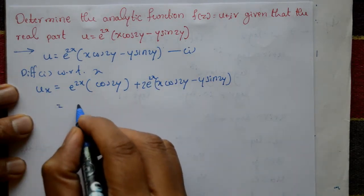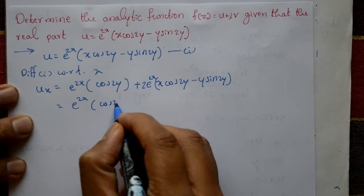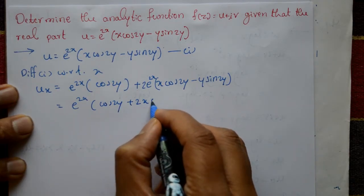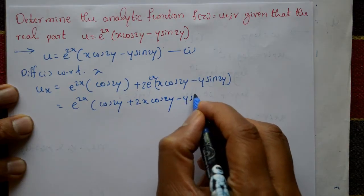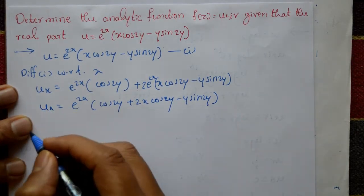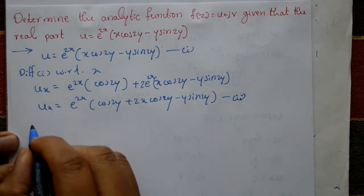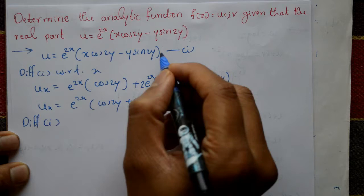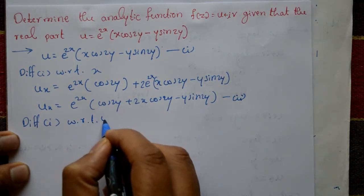Taking e^(2x) as common: ∂u/∂x = e^(2x) * (cos2y + 2x·cos2y - y·sin2y). This is called equation number 2. Next, differentiate equation 1 with respect to y: ∂u/∂y.